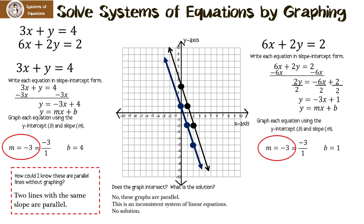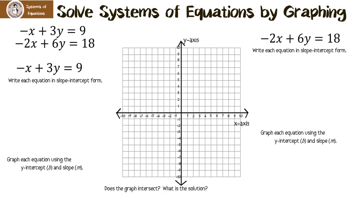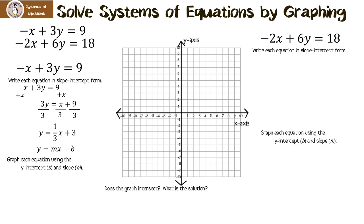Let's graph another system of equations. The first equation needs to be put in slope-intercept form. Adding x to both sides gives 3y equals x plus 9, then dividing by 3 gives y equals one-third x plus 3. The slope is one-third and the y-intercept is 3. Graph the y-intercept at 3, then go up 1 and over 3, up 1 and over 3. Draw the line.